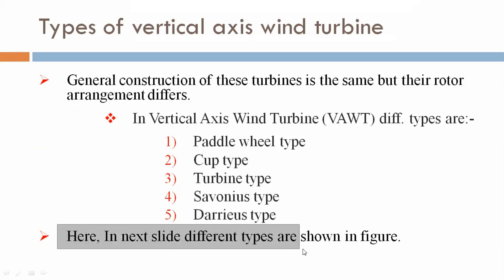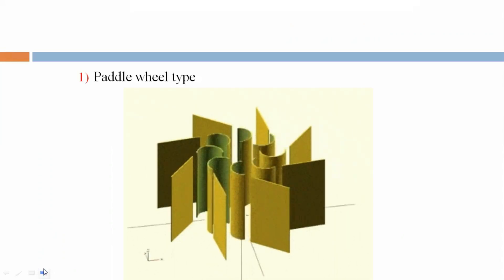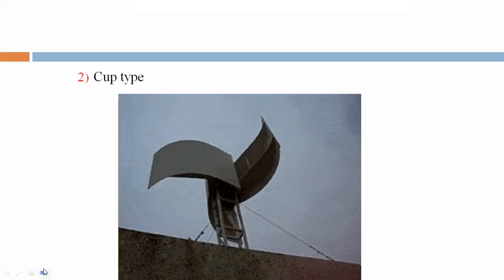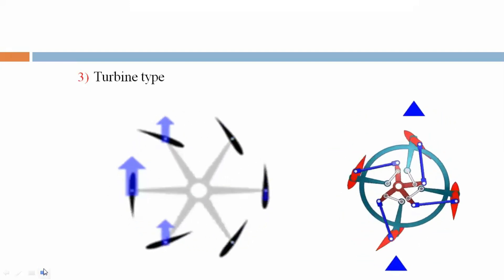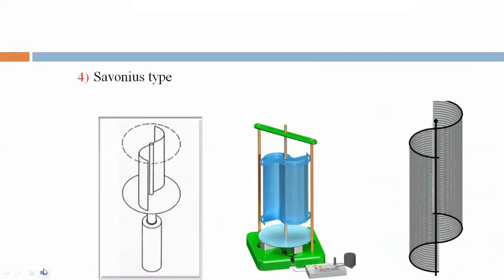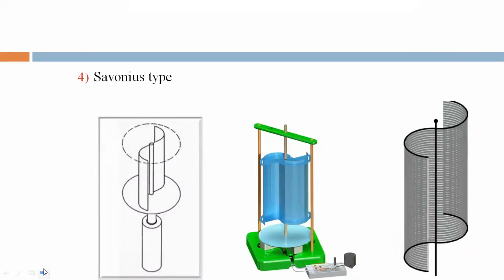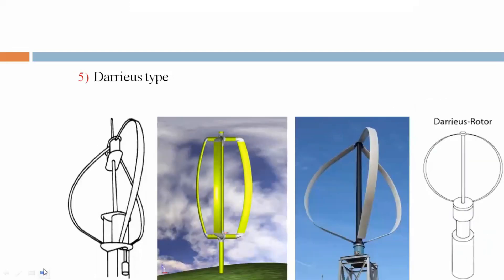In the next slides, different types are shown in figures. This is pedal wheel type. This is cup type. This is turbine type. This is Savonius type. Savonius type has different subtypes: drag type, multi-blade, and split type. This is Darrieus type.